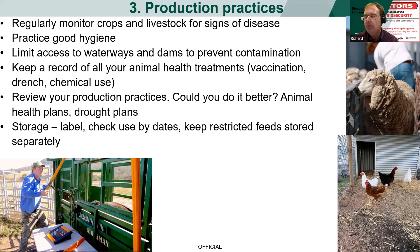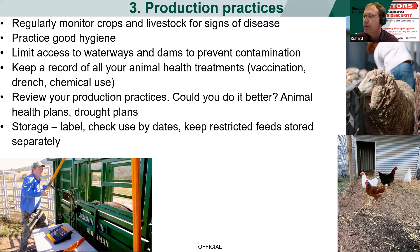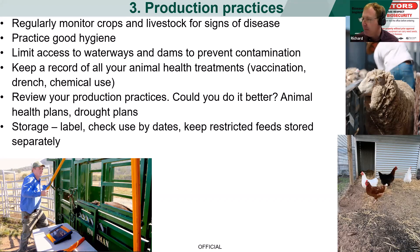Keep a record of all your animal health treatments — that's a requirement under most programs including LPA, dairy industry, and if you sell crops. This can include drench dates, vaccination dates, dates when chemicals were applied to paddocks, the concentration, batch numbers, and expiry dates.